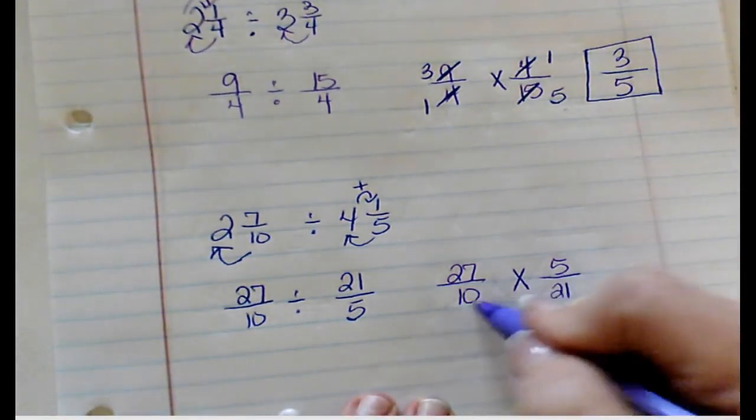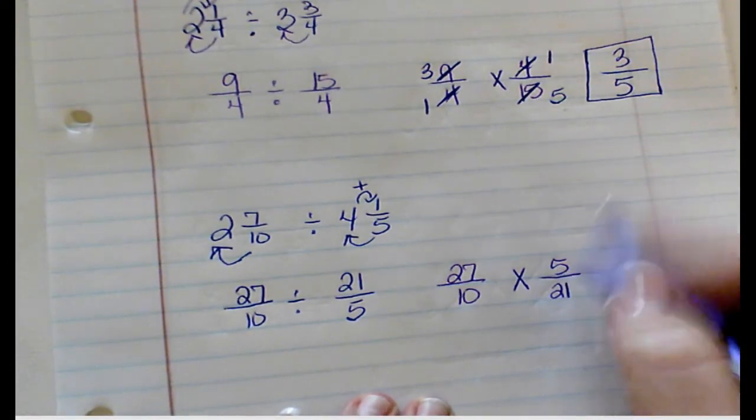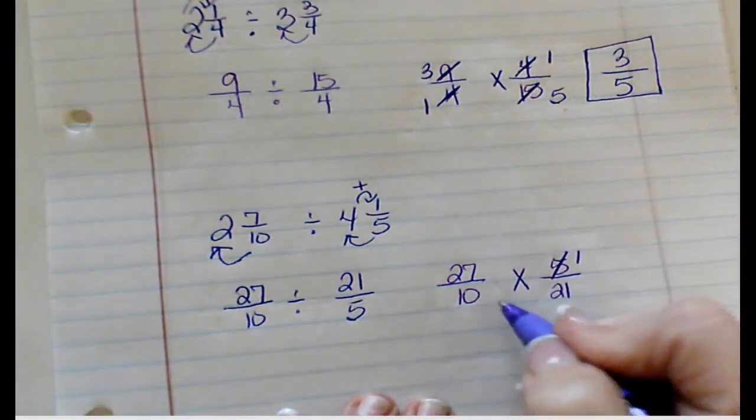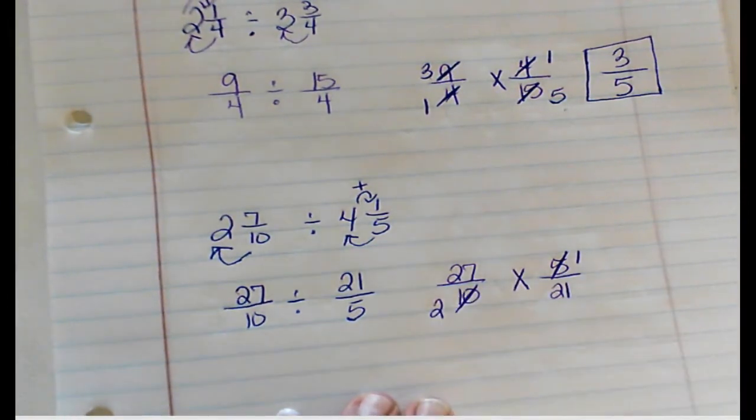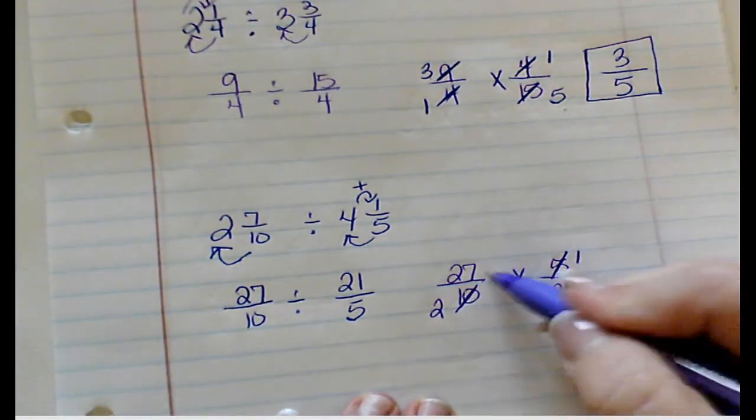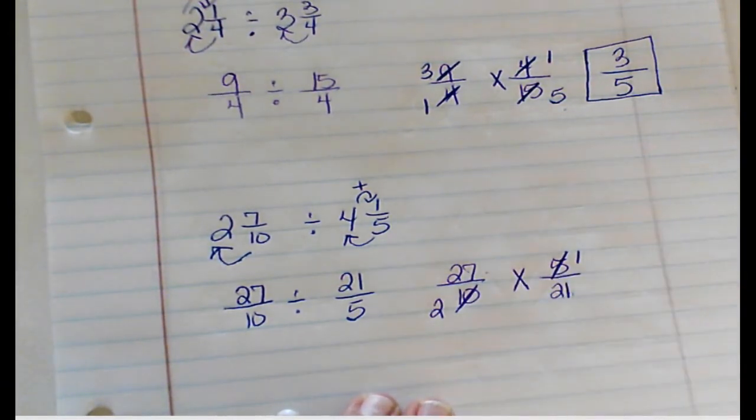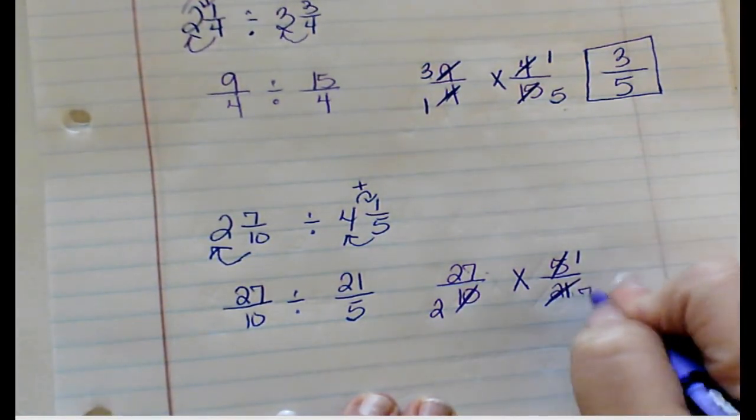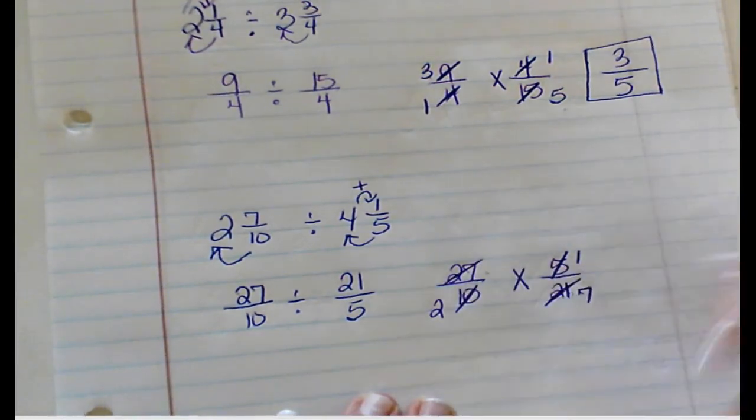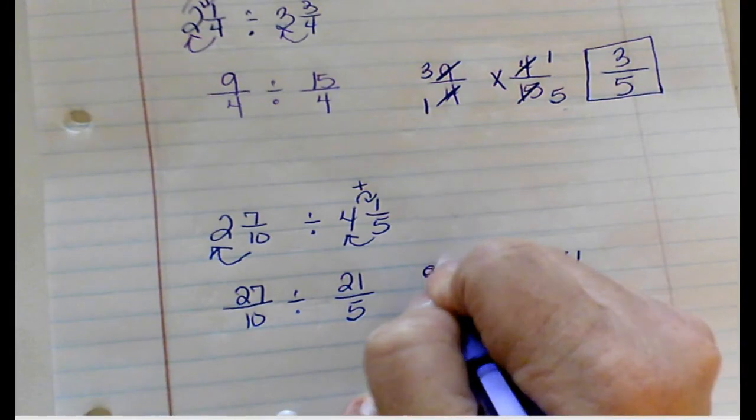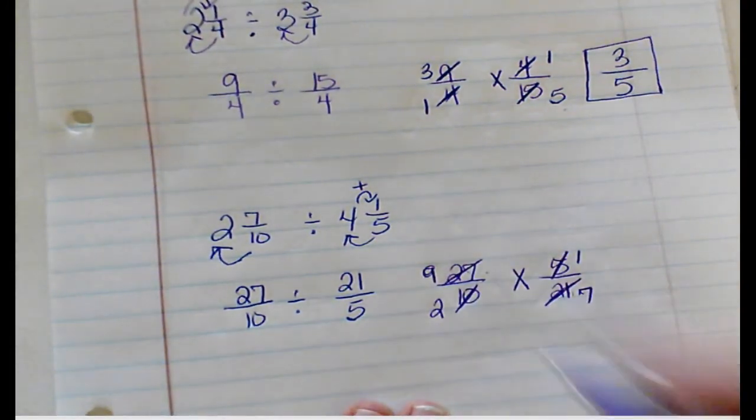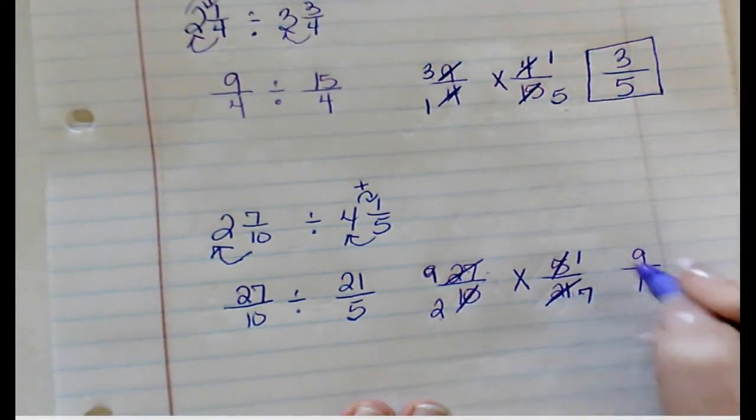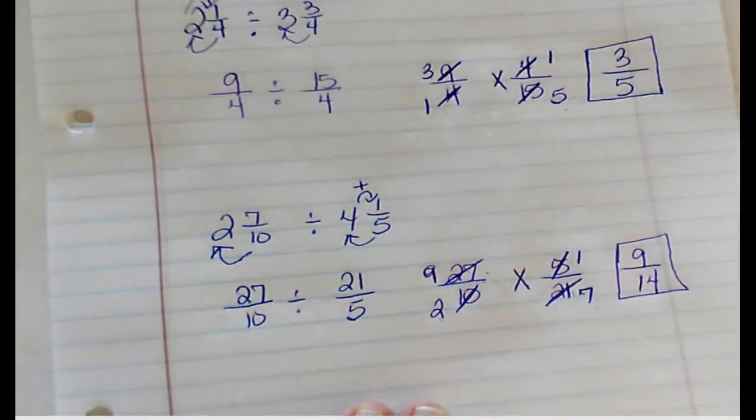Looking diagonal, 10 and 5 - I can divide both of them by 5. 5 divided by 5 is 1, 10 divided by 5 is 2. Looking diagonal, 21 and 27 - I can divide both of them by 3. 21 divided by 3 is 7, 27 divided by 3 is 9. 9 times 1 is 9, 2 times 7 is 14. So my answer is 9/14.